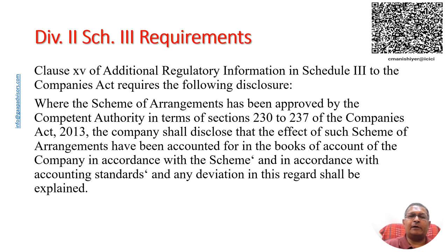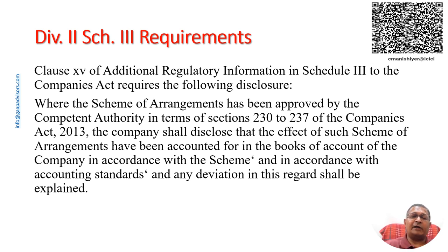Clause 15 of Additional Regulatory Information in Schedule 3 requires a company to disclose whether the accounting has been done in accordance with the approved scheme of arrangement. The company is also required to disclose whether the accounting specified in the approved scheme is in accordance with accounting standards. Where the accounting in the approved scheme is not in accordance with applicable accounting standards, the company is required to disclose the deviation and explain the same. Therefore, there can be a case where financial statements are not prepared only in accordance with Ind AS but also in accordance with the approved scheme where the accounting in the approved scheme is not in accordance with Ind AS.